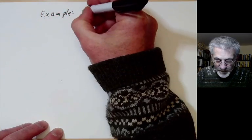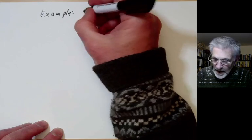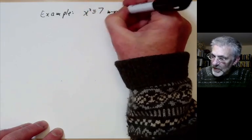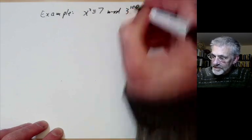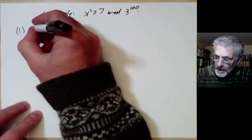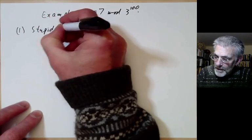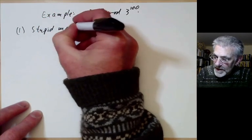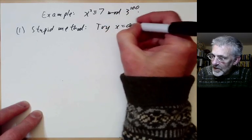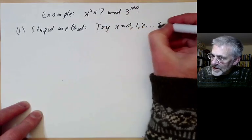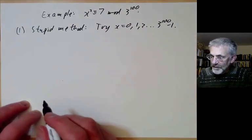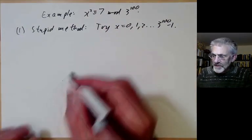To illustrate the methods, let's try to solve x² ≡ 7 mod 3^100. The stupid method is to try x = 0, 1, 2, all the way up to 3^100 − 1. This is obviously far too slow.